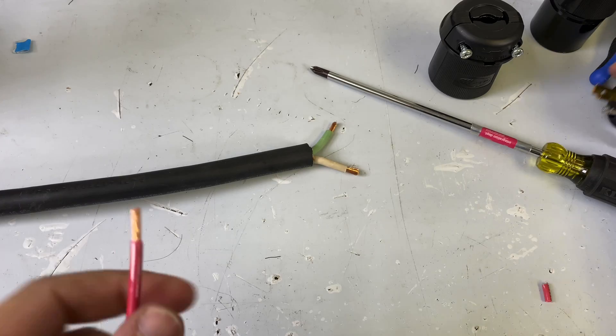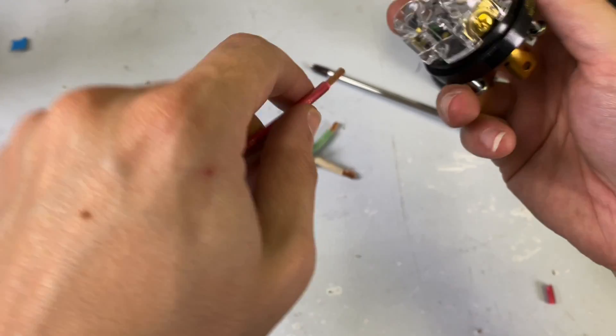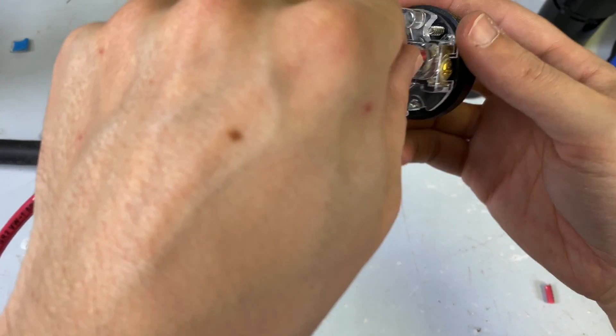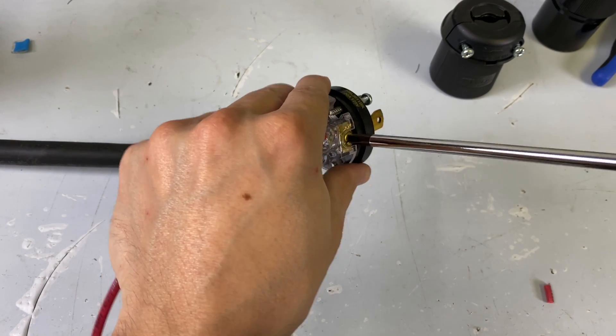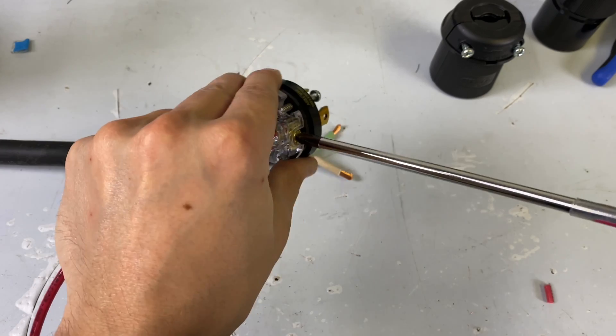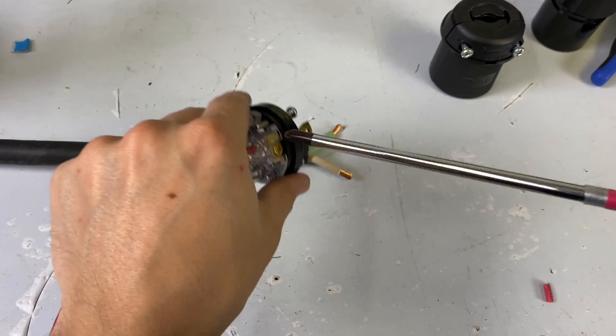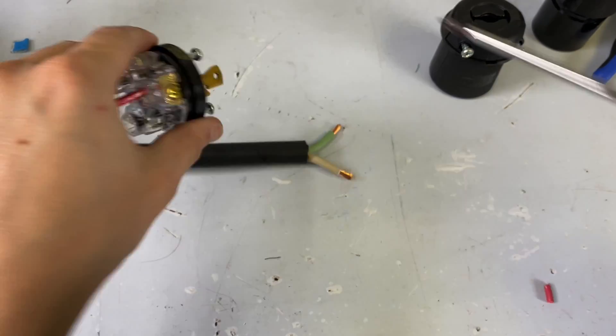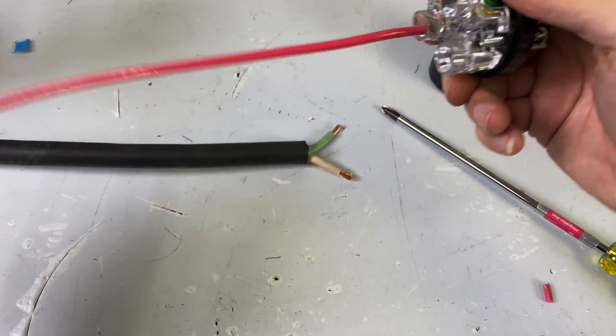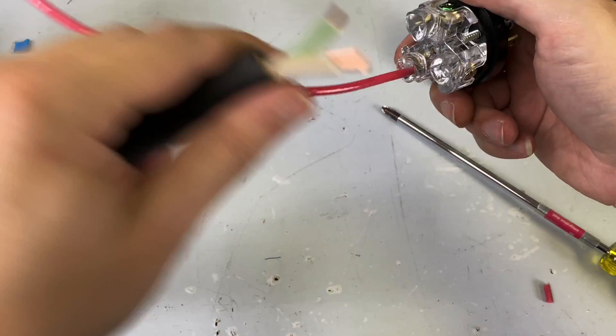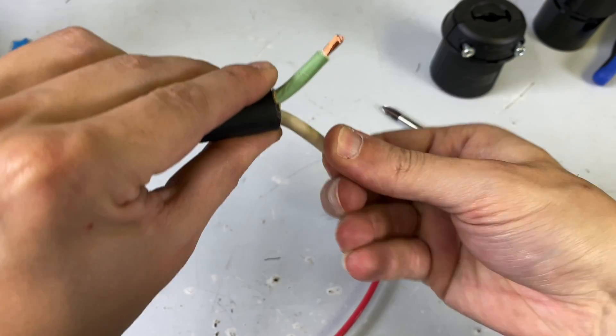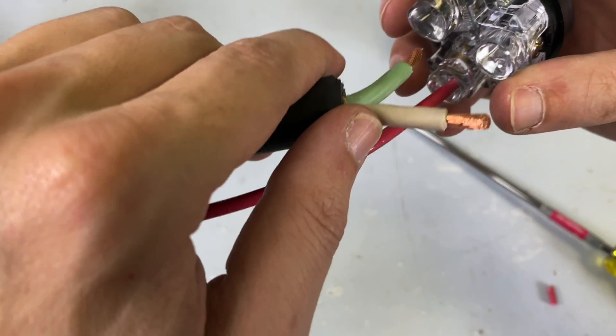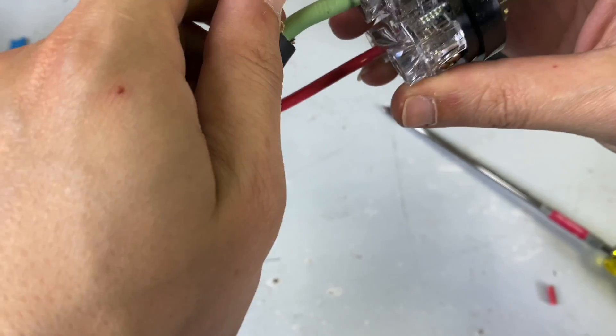Okay, so to build one of these cables, we're just going to take our hotline and put that into the hot terminal on our plug. Tighten this guy down. And then we can take our ground.